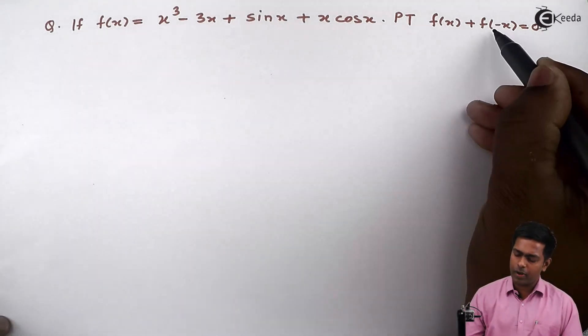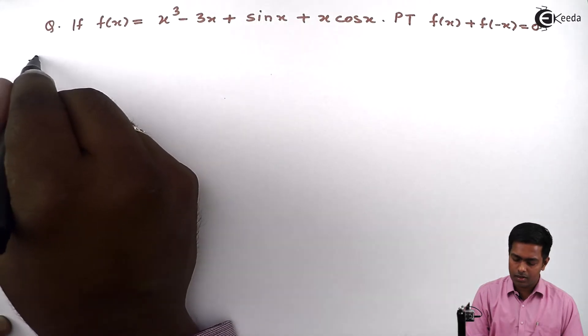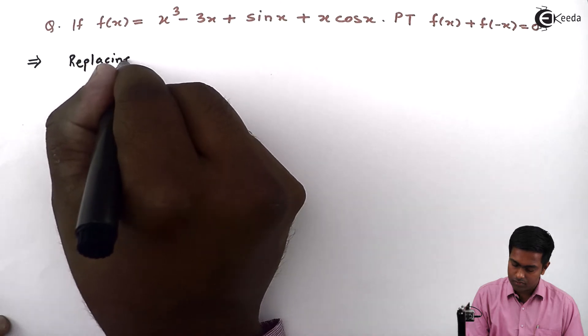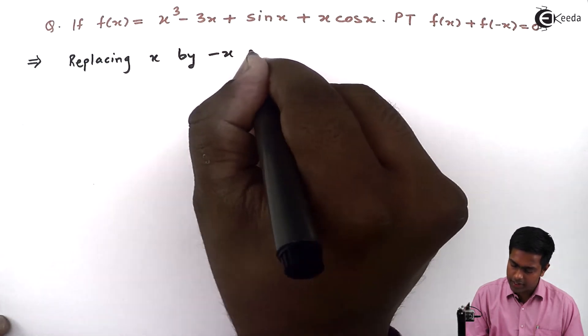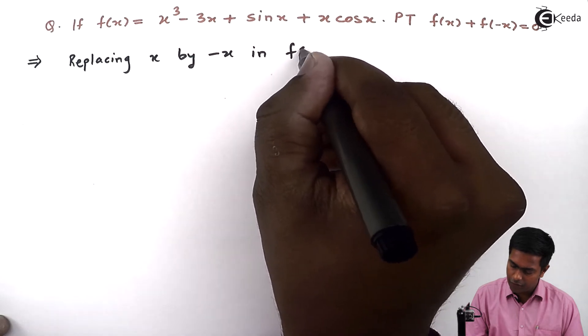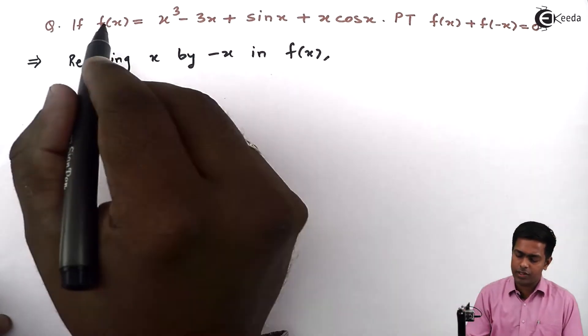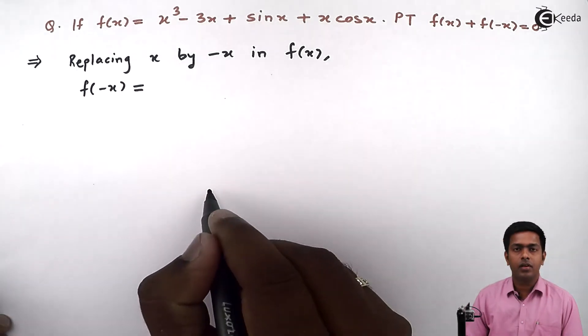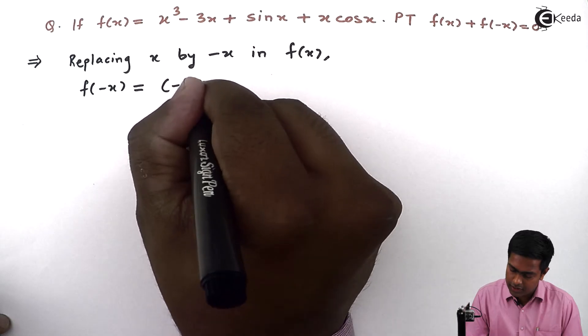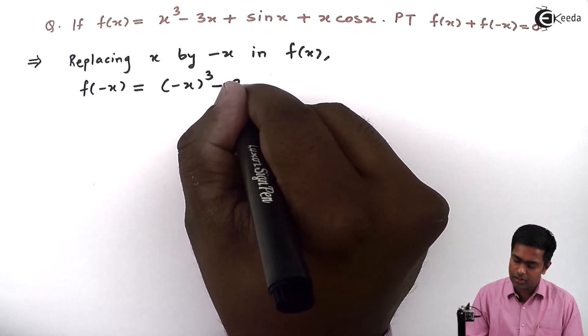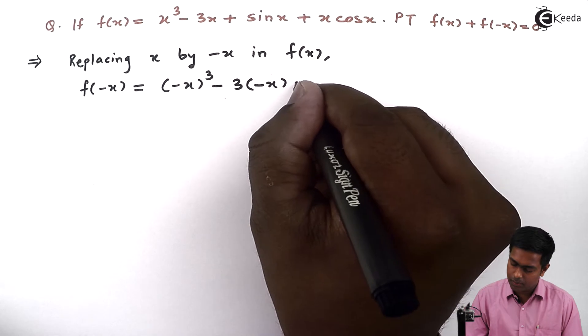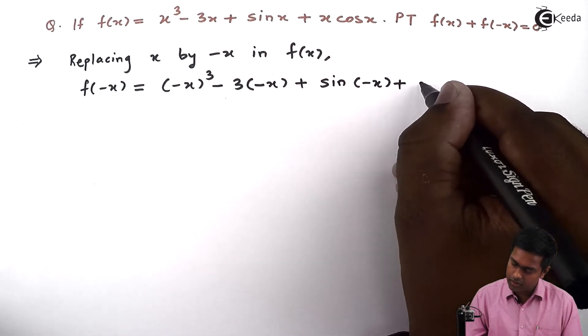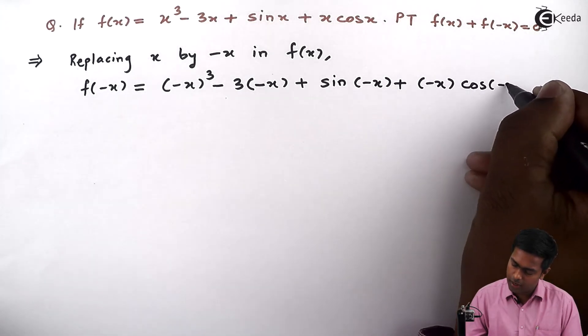So to get the value of f(-x), I will say replacing x by minus x in f(x). So by replacing x with minus x here, we will get f(-x) on left hand side. The right hand side will give us (-x)³ minus 3 times (-x) plus sin(-x) plus (-x) into cos(-x).